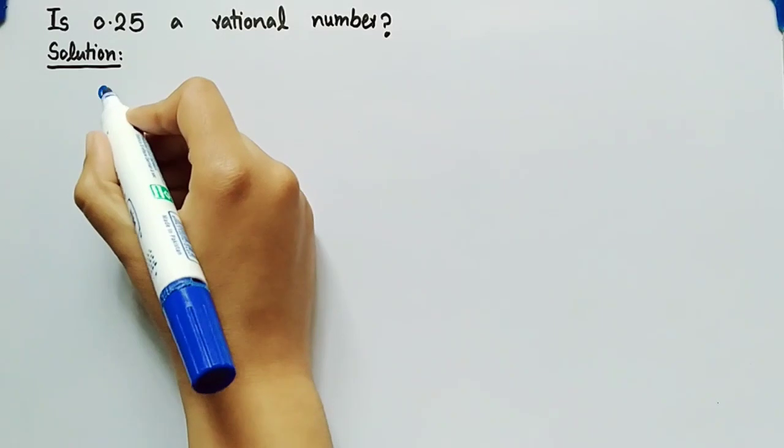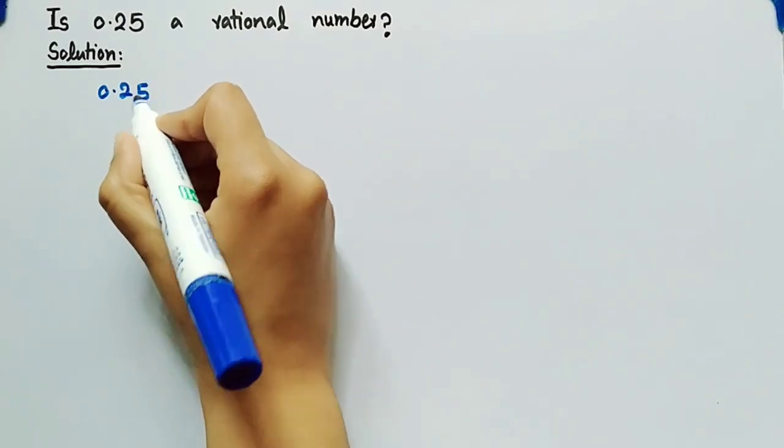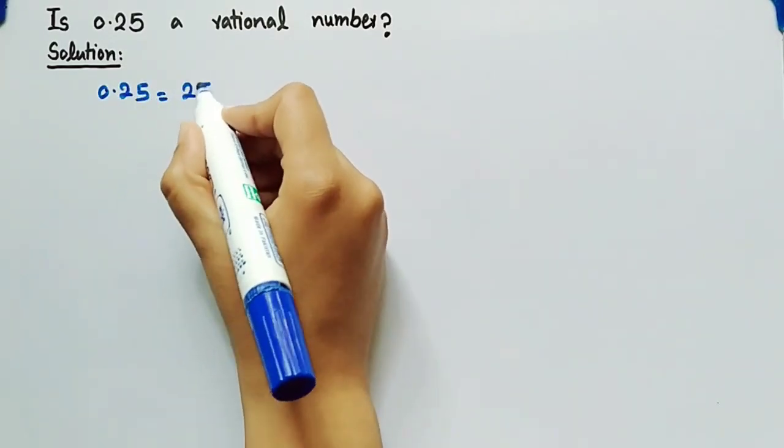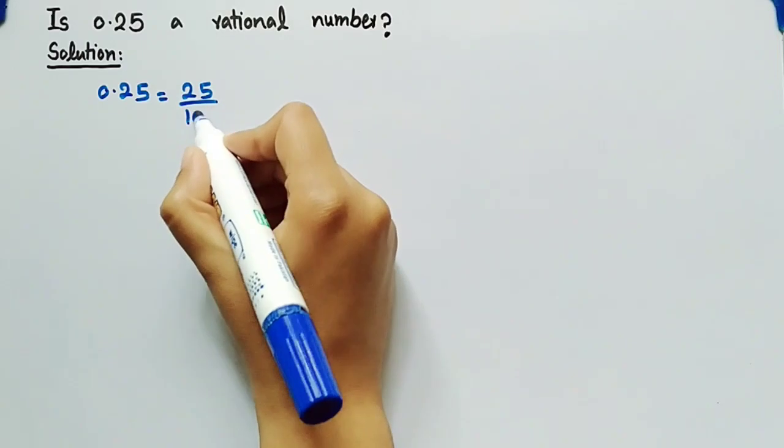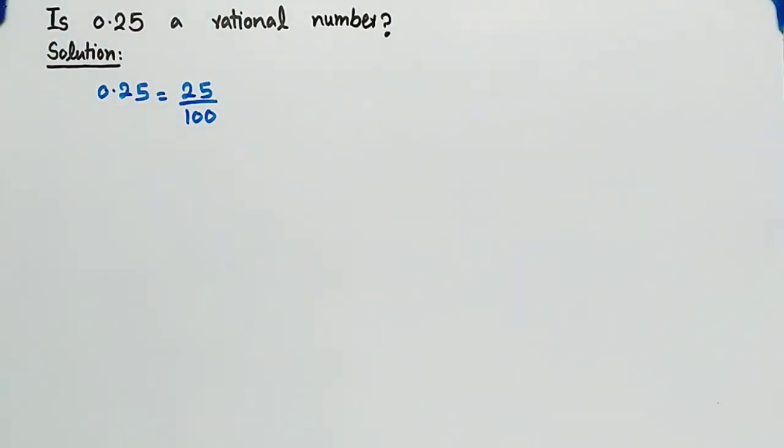We know that 0.25 can be written as 25 divided by 100. For a number to be a rational number, it needs to satisfy two conditions.